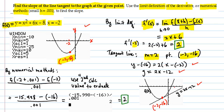By numerical methods, to find the slope, we would want to evaluate f of negative 2 plus 0.001, subtract f of negative 2 divided by 0.001.